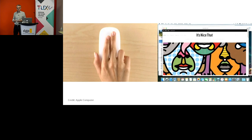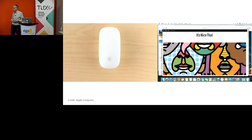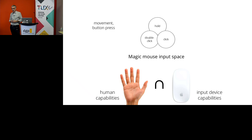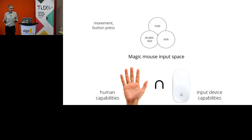So the input space — it's still a mouse, it still has the basic characteristics of that original mouse — but now the input space is being increased. You could argue that this is getting closer to harnessing a bit more of the capabilities of what we can do with our hands. We can do a lot more than just click on a single button.